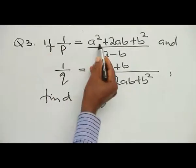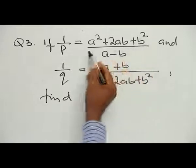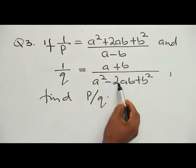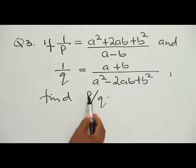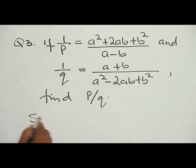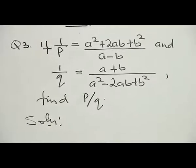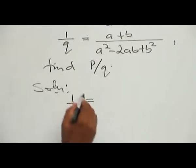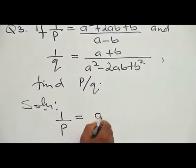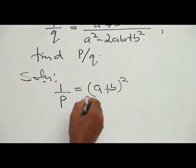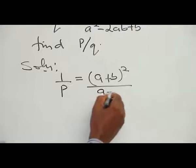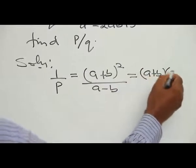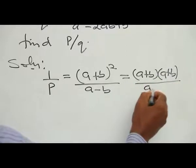Question 3: Given 1 over P equals (A squared plus 2AB plus B squared) all over (A minus B), and 1 over Q equals (A plus B) all over (A squared minus 2AB plus B squared), find P over Q. For the first case, we factorize the numerator: A squared plus 2AB plus B squared equals (A plus B) squared, which is (A plus B)(A plus B), all over (A minus B). Nothing cancels, so P equals (A minus B) over (A plus B)(A plus B).